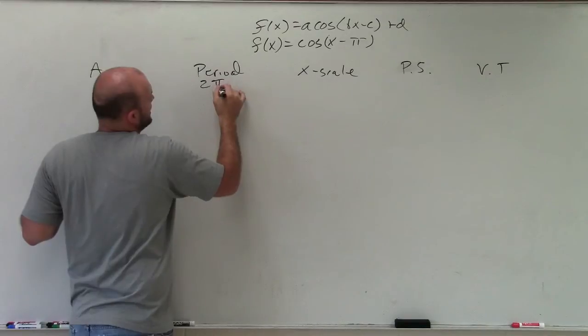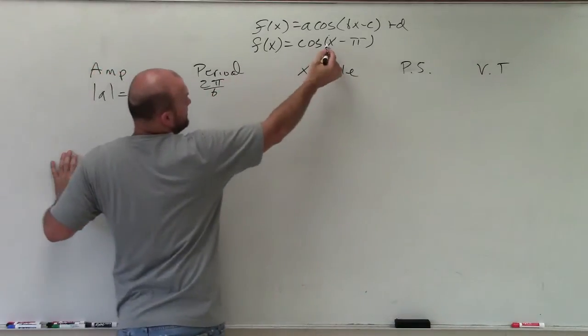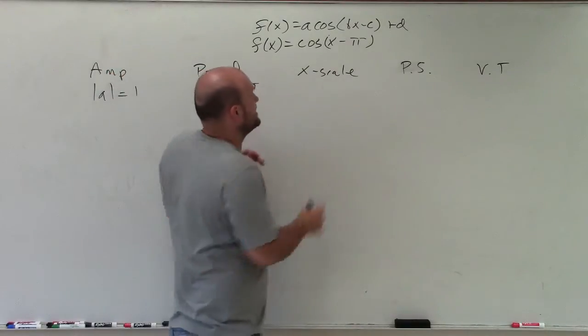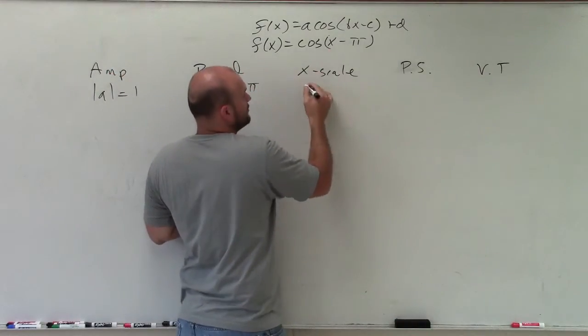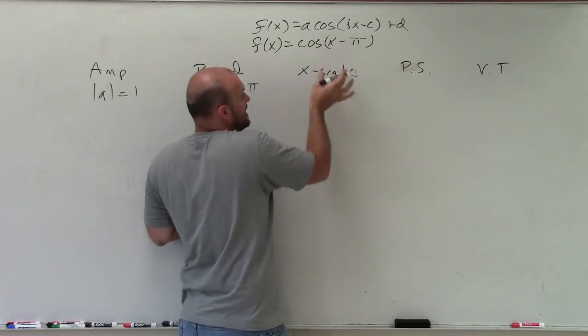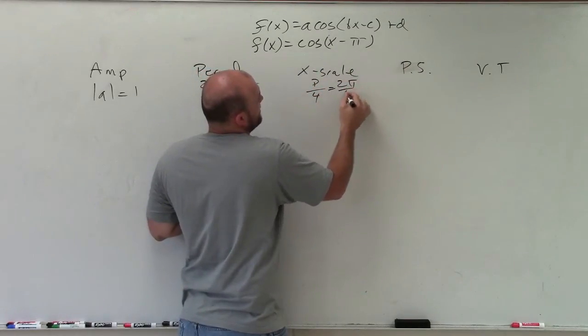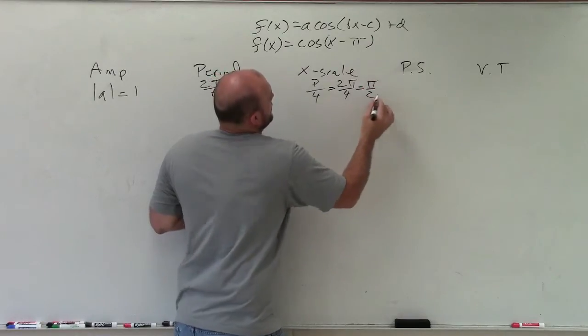Period is 2π divided by b, which in this case, b is our coefficient of x, which is just 1, so it's 2π. Our x-scale is just period divided by 4, which is 2π divided by 4, which equals π/2.